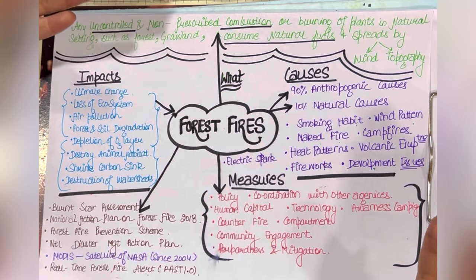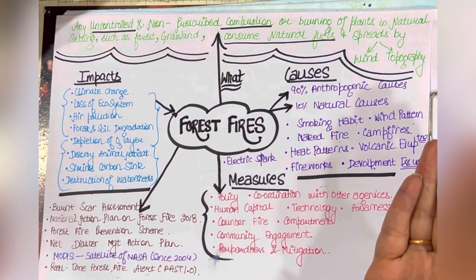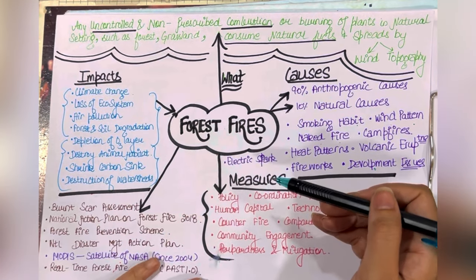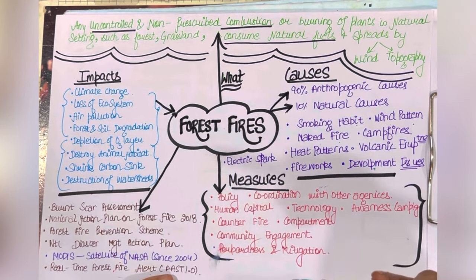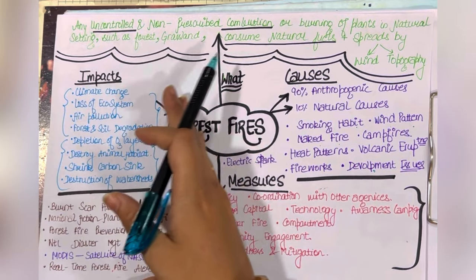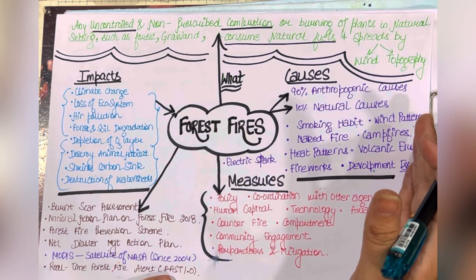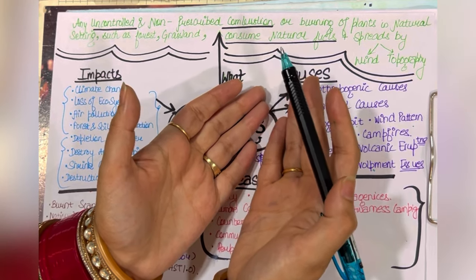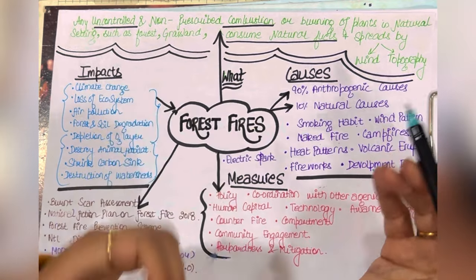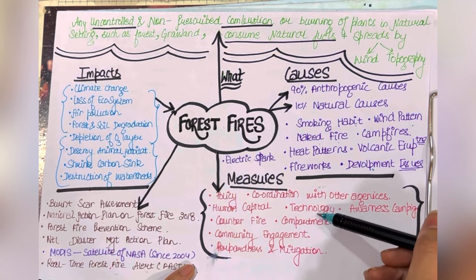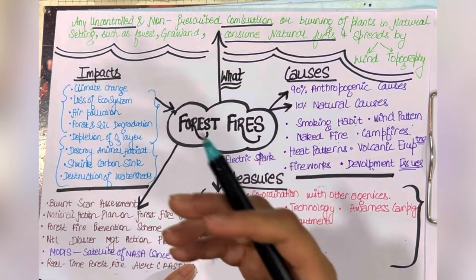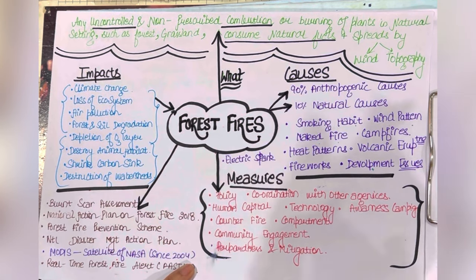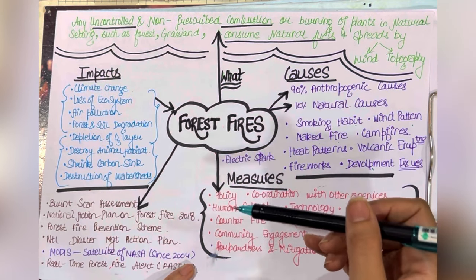I used to make these notes for my students at the academy and now we are sharing this technique with you. For measures to control forest fires — one method is counter-firing. If a fire is approaching from one side, we deliberately set fire on the other side so both fires meet and extinguish each other, removing the fuel source. Another measure is human capital and technology — such as helicopters. However, it is expensive and not widely used in India, unlike Australia where forest fires are very common and helicopters are used for firefighting.